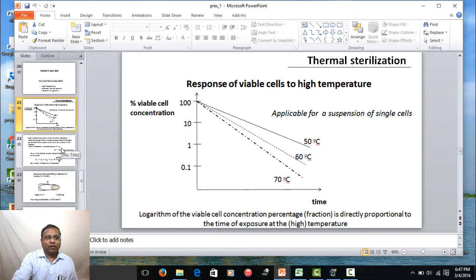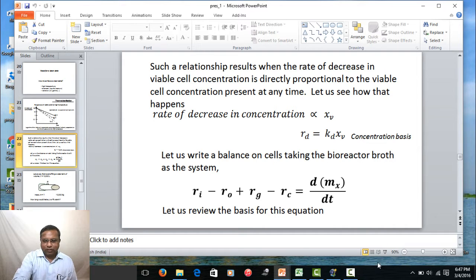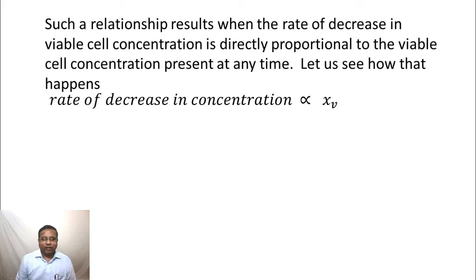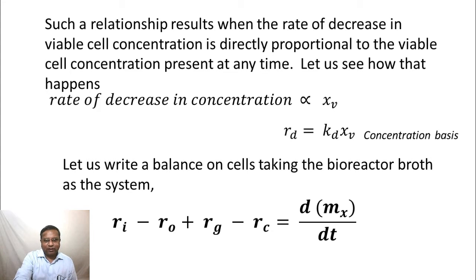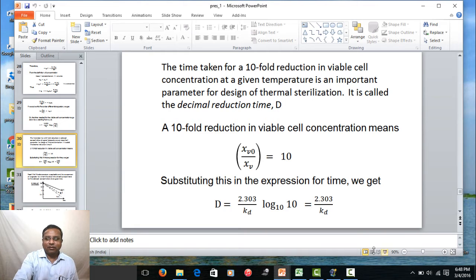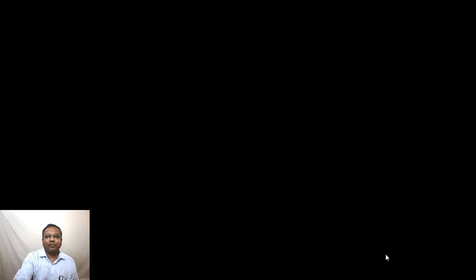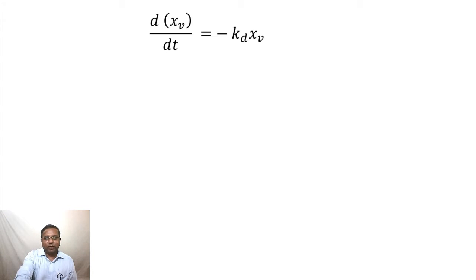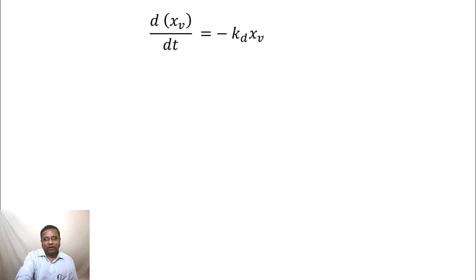We said that we could analyze the situation if we considered the rate of decrease in concentration to be directly proportional to the concentration of viable cells, a sort of a first order relationship. Using that and the fact that this operation is happening in a batch bioreactor, we wrote a balance for it and arrived at this governing equation: d/dt of xv equals minus kd times xv. And if we solve this, we would get ln of xv0 by xv equals kd times t.